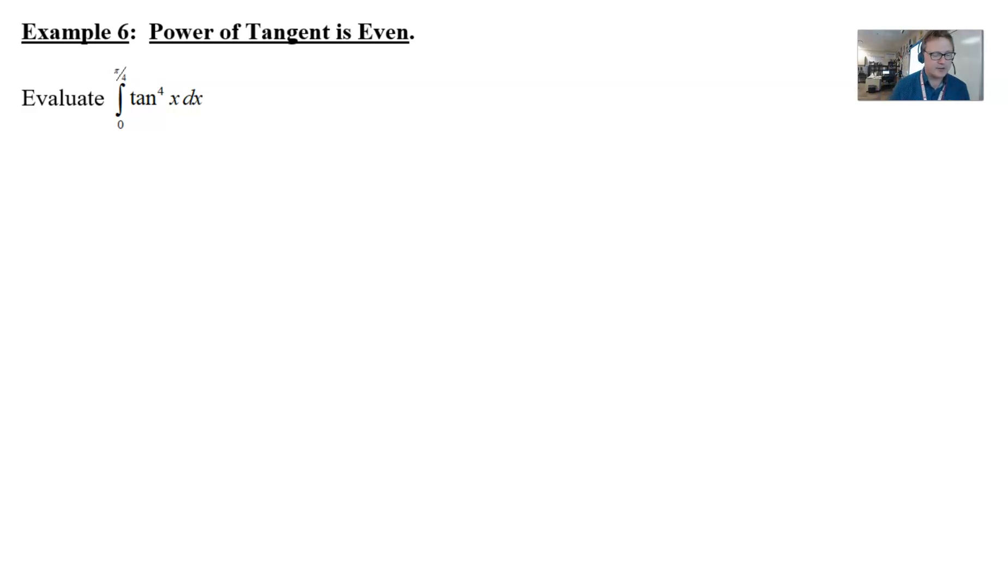So go team, let's figure this guy out. Here's our example: integrate tangent to the fourth, and we do have boundaries zero to pi over four. That doesn't have a lot to do with our procedure. We just have a little bit of work to do at the end to evaluate that. So let's talk about this tangent to the fourth. What are we going to do?